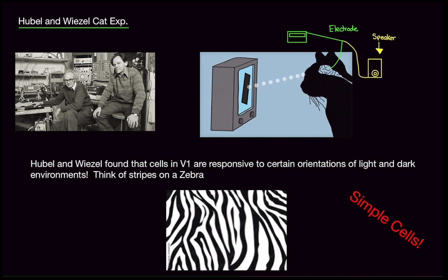Simple cells have a white area and a black area arranged in a pattern. As long as the light you're receiving matches up with the white area of the receptive field of the simple cells, they will fire. But if you have a white bar going over the black areas of the simple cells, they will not fire.